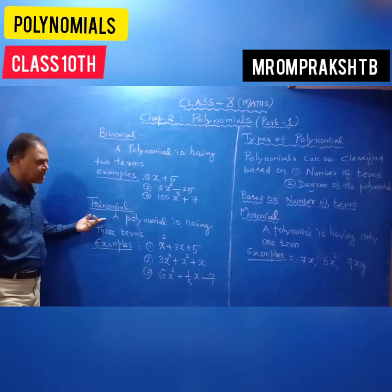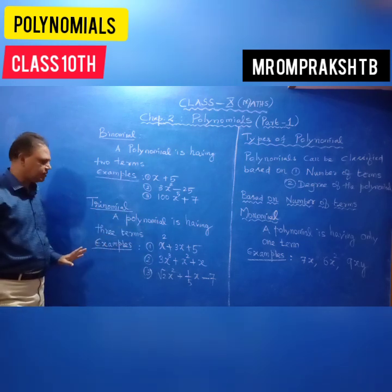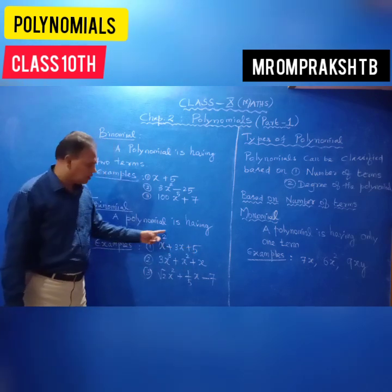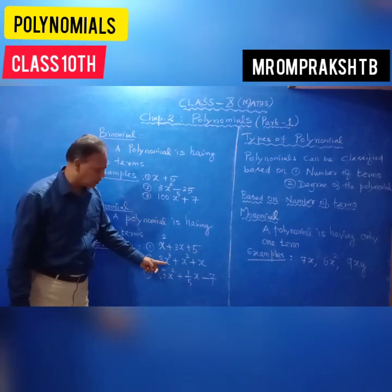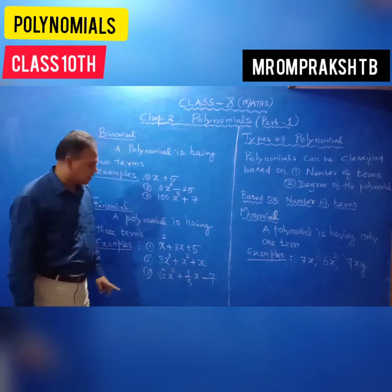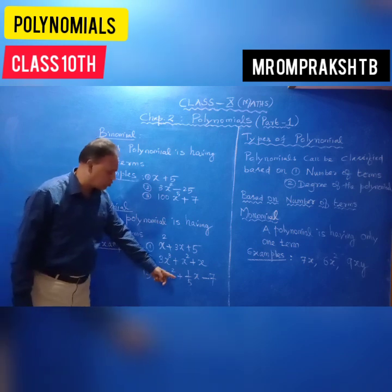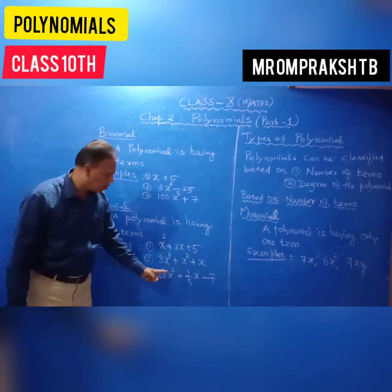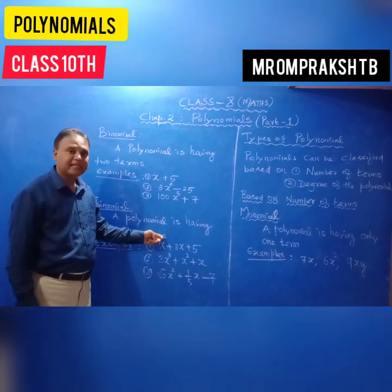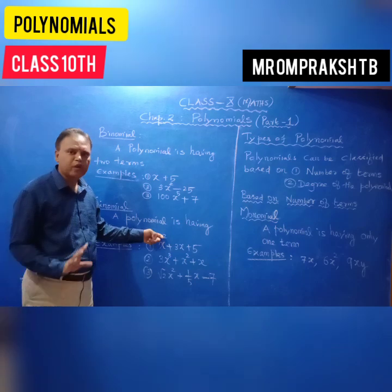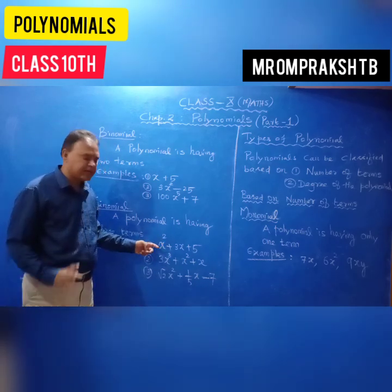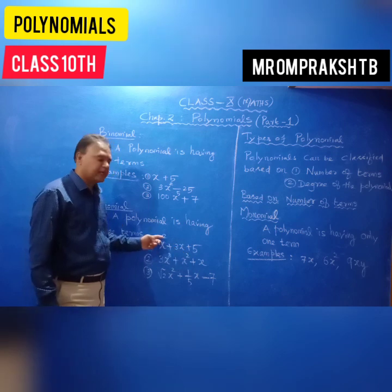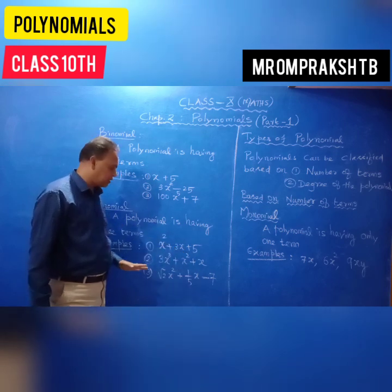A trinomial has three terms — for example, x squared plus 3x plus 5. Note that the powers of the variable in a polynomial must be whole numbers. If we have x power minus 2, that is not a polynomial. Root x can be written as x power 1/2, which is a fraction — also not a polynomial. The power of the variable must be a whole number only.